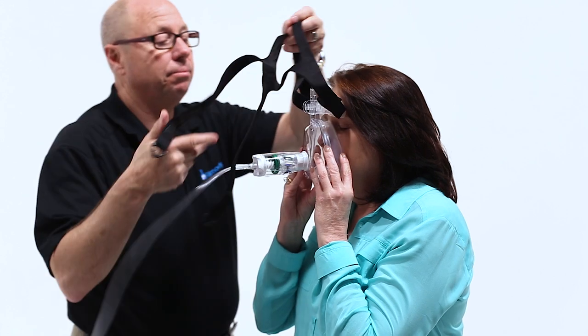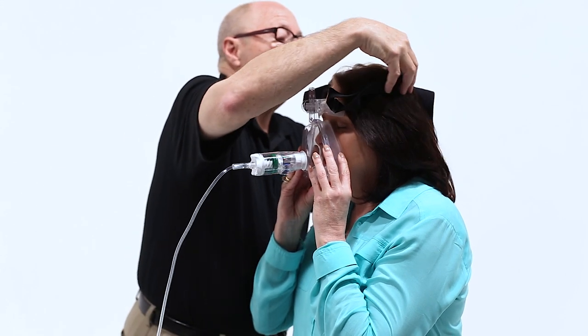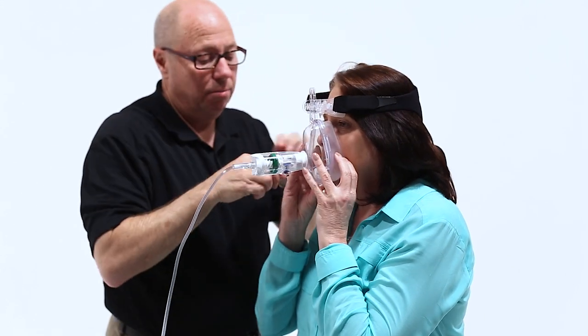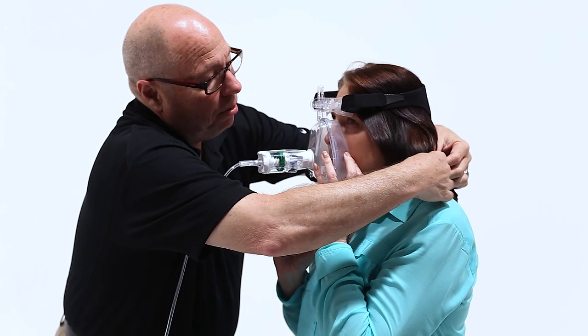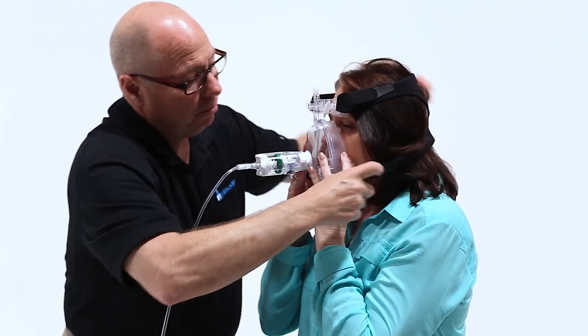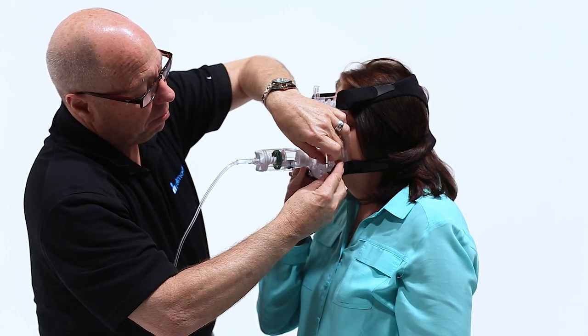At the top, place the straps up and over the patient's head. You will connect the mask at the bottom using the clips. Once you've placed the clips on either side, you will pull the Velcro to tighten the mask.